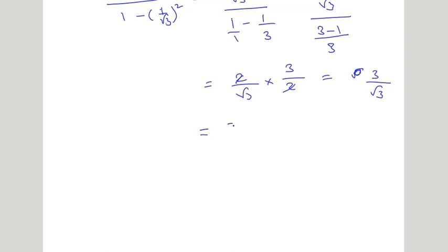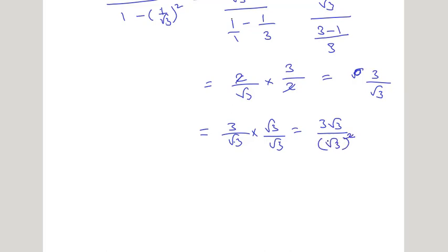Since 3/√3 has an irrational denominator, we rationalize by multiplying by √3/√3. This gives 3·√3 / (√3·√3) = 3√3/3. The 3s cancel and we get √3.